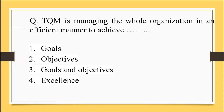Next question: Total Quality Management is managing the whole organization in an efficient manner to achieve — options: A) goals, B) objectives, C) goals and objectives, D) excellence. TQM is basically about achieving excellence, so the correct option is D, excellence.